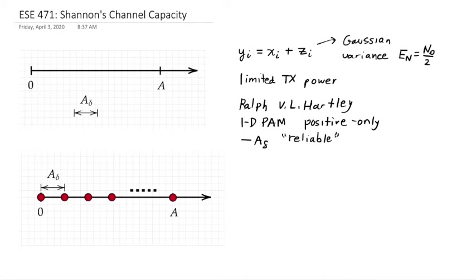Well, Hartley said that we are going to set this A delta large enough so that the system is reliable. He didn't really define what reliable meant, but presumably you'd pick it big enough so that you were okay with whatever errors that would occur. Of course there would be errors because the noise is Gaussian, so no matter what A delta you pick, there's a chance that the distance between symbols would be exceeded by the noise. In this case, the number of symbols we can have is 1 plus A divided by A delta.